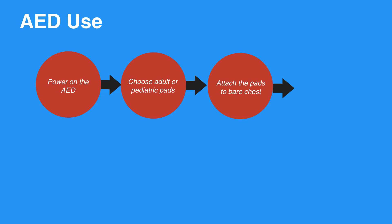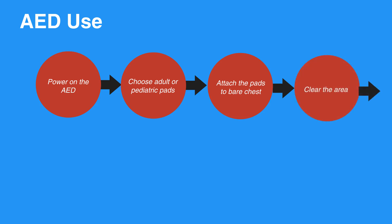Be sure not to attach the pads over any medication patches, and dry the chest if necessary. Place one pad on the upper right side and the other on the chest a few inches below the left armpit. Clear the area to allow the AED to read the rhythm, which may take up to 15 seconds.